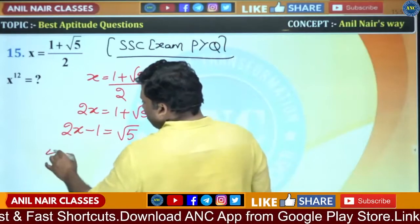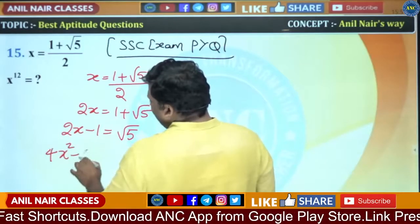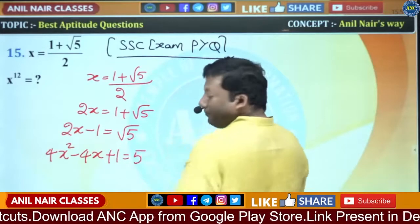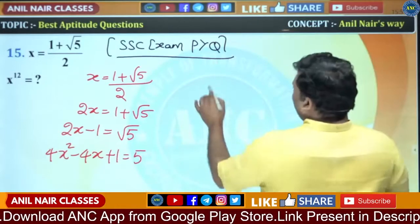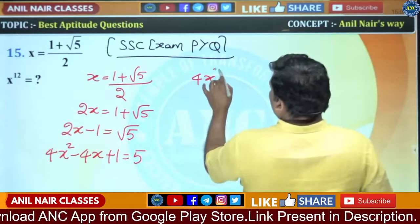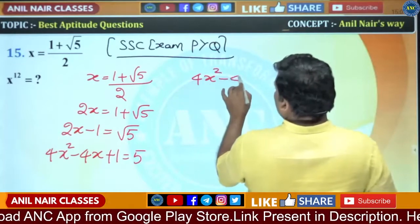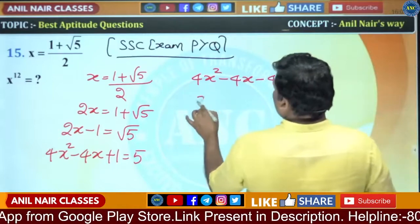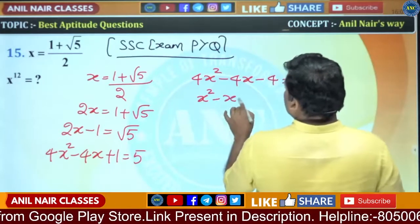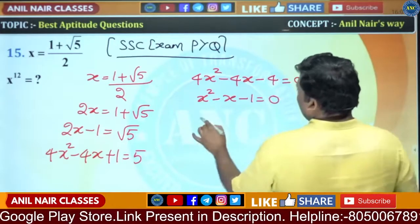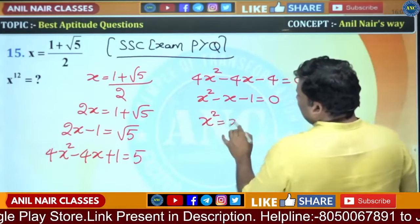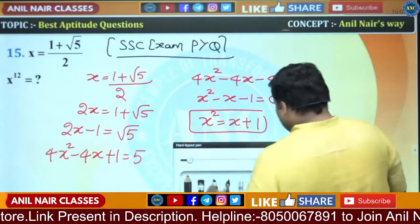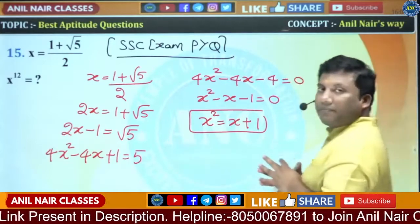Squaring on both sides: 4X² minus 4X plus 1 is equivalent to 5. Putting 5 to the left hand side: 4X² minus 4X minus 4 is equivalent to 0. Therefore X² minus X minus 1 equals 0, so X² is equivalent to X plus 1.